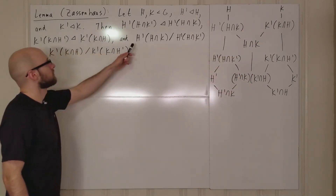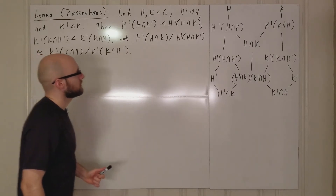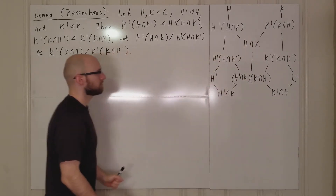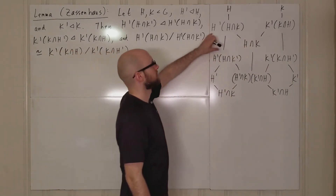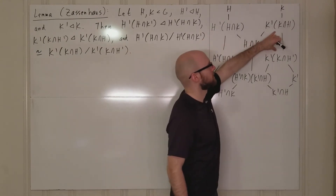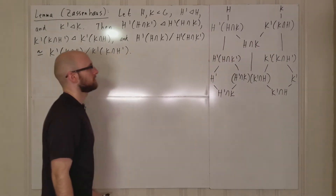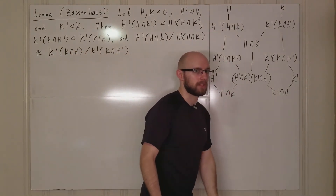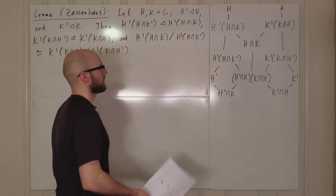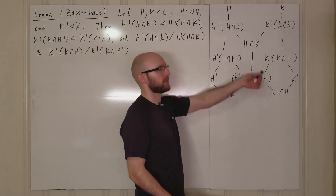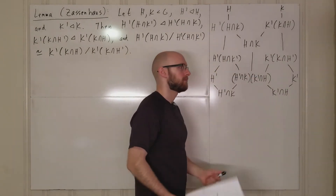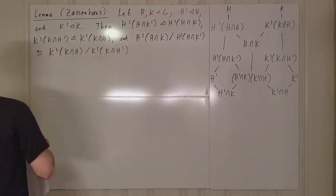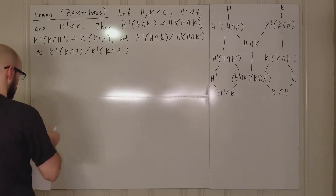And further, this mod that is isomorphic to this mod this. So basically this mod this is isomorphic to this mod this. What we're really focusing on is these two and these two. The reason it's called the butterfly lemma is that if you fill in all the other stuff, this sort of looks like an upside-down butterfly. I actually have one of my math shirts with this picture on the back, but I didn't wear it today.